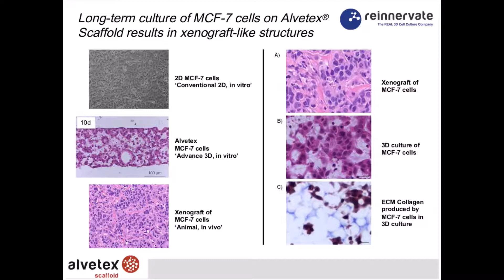On the right are high-magnification images of the xenograft itself in panel A and a higher-mag image of the Alvatex culture in panel B. We also find that when cells grow inside Alvatex, they start to produce extracellular matrix — in this case, the MCF7 cells produce extracellular collagen.